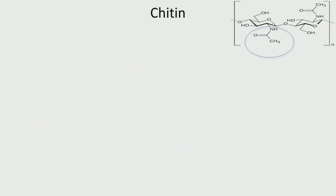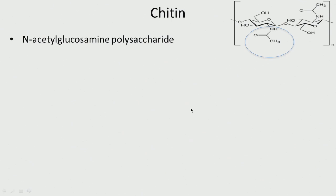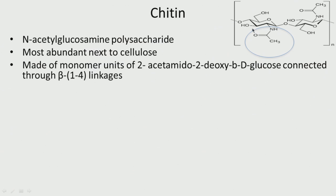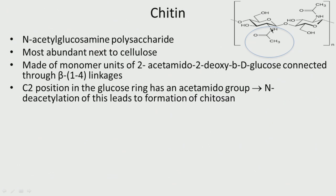Next comes chitin. Chitin has an acetyl group — an N-acetyl group — and is an N-acetyl glucosamine polysaccharide. We have the acetyl group attached to the nitrogen amine. It is the most abundant polysaccharide next to cellulose, made of monomers of 2-acetamido-2-deoxy glucose connected through beta 1,4 linkage. If we remove this acetyl group through deacetylization, that leads to formation of chitosan.